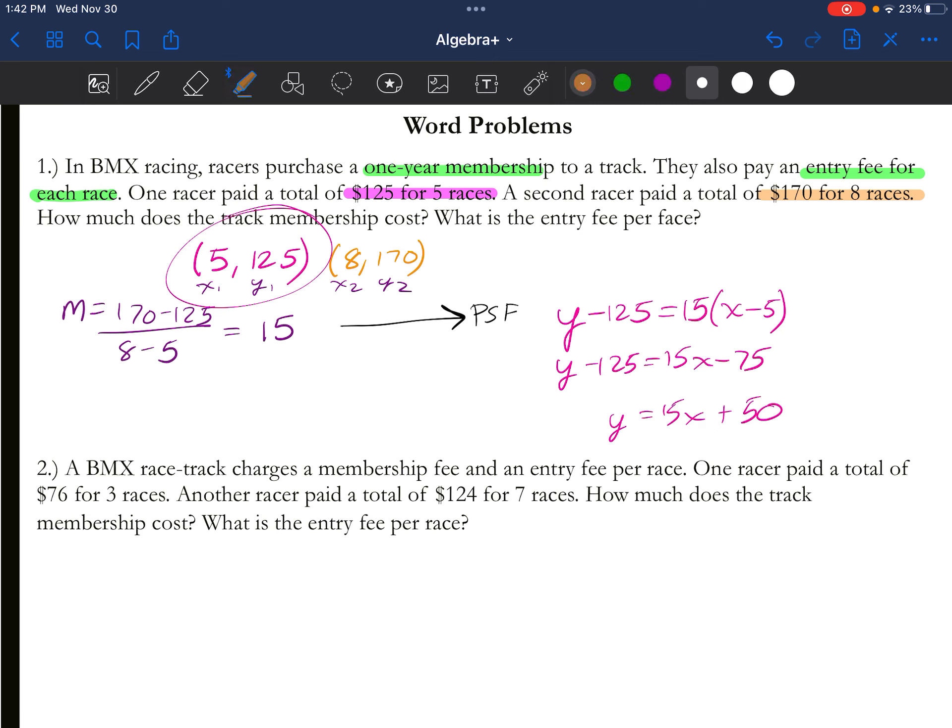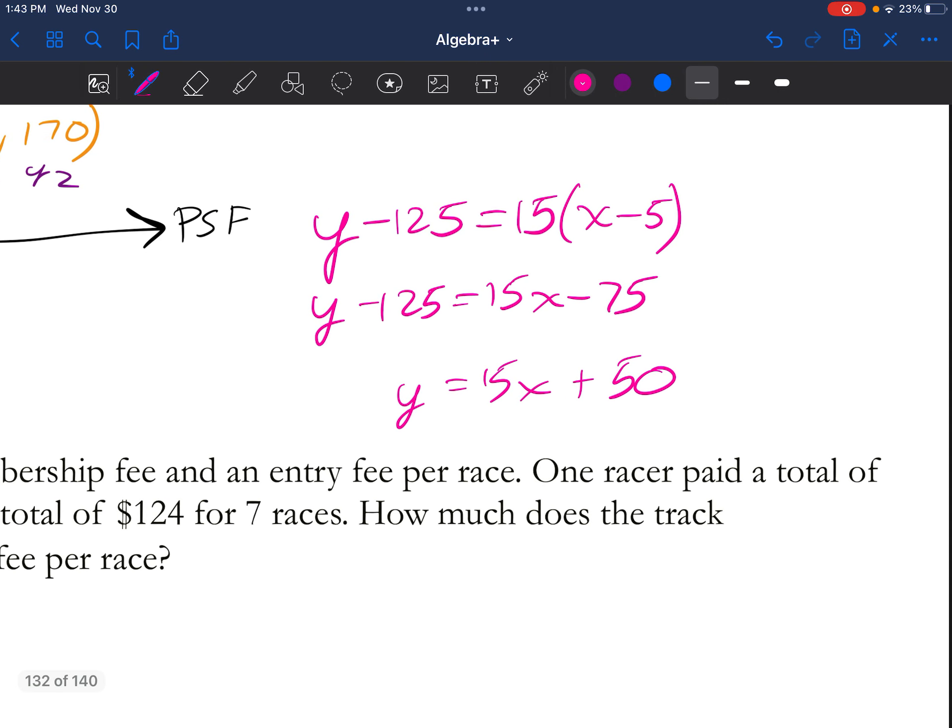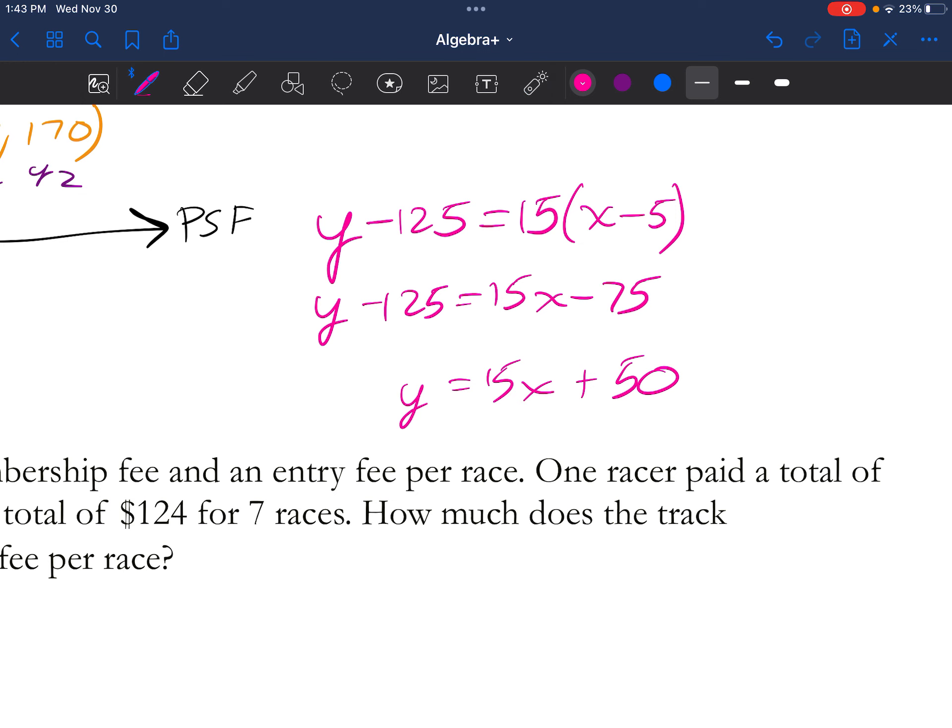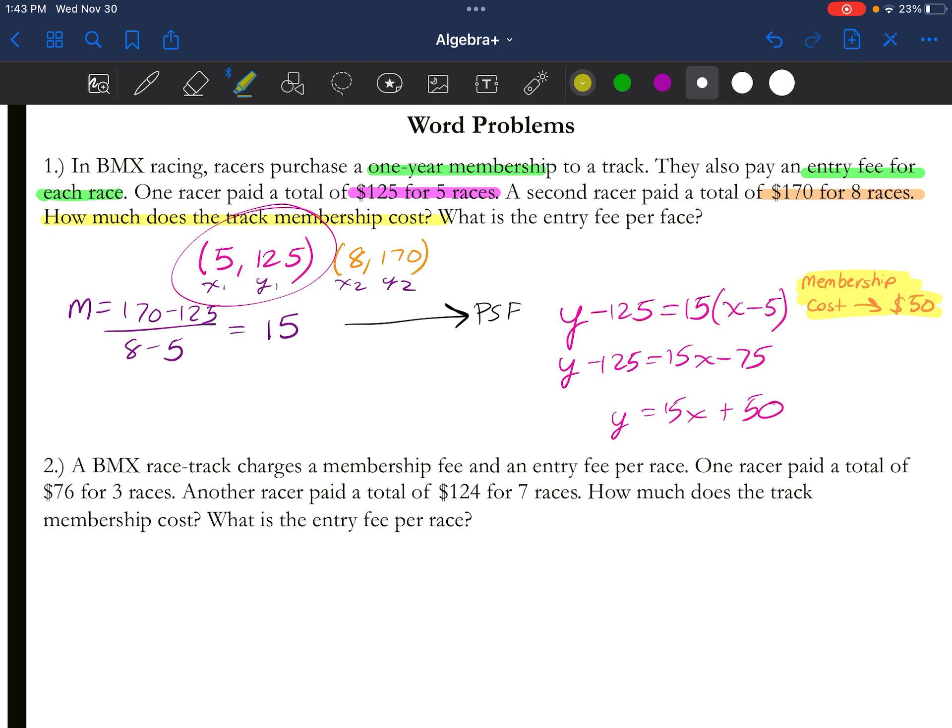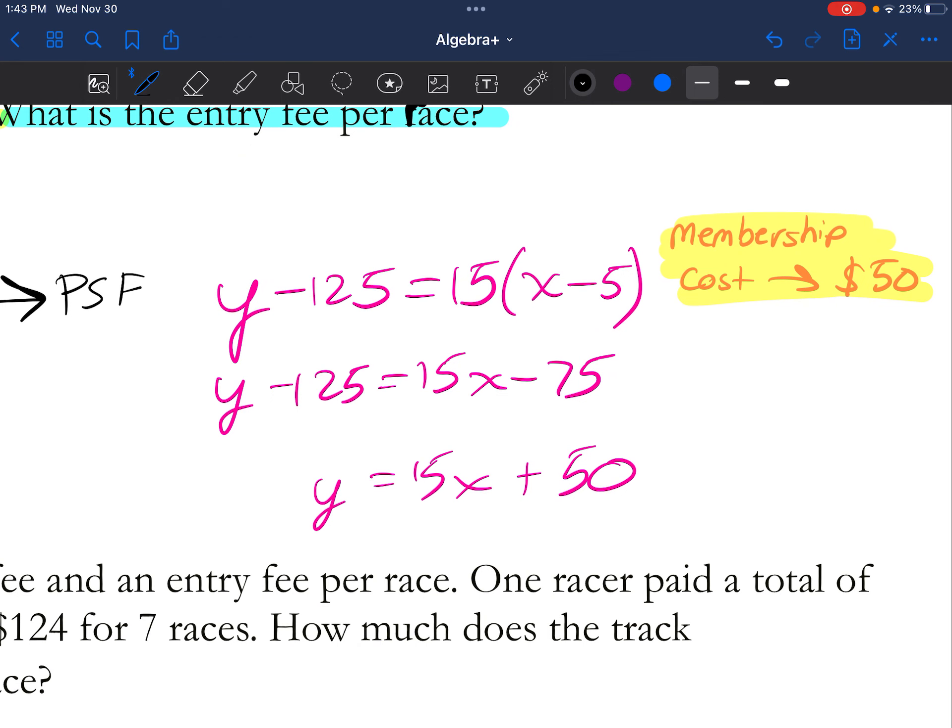Okay, so I have my equation, but look at the question. That's not what it's asking me. It's asking me how much does the track membership cost. So that's your y-intercept here. That's just the membership. So membership cost is $50. That's the first answer. The second question is asking us what is the entry fee per race. Oops, sorry, it says 'face,' change that to 'race.' So entry fee per race, because it's 'per,' it's telling us that that's your slope. That is $15.